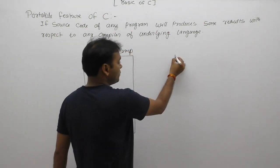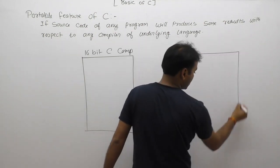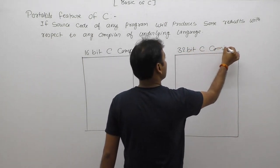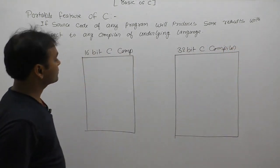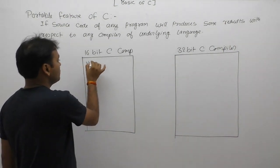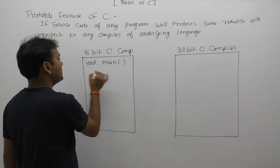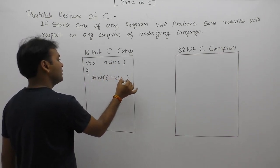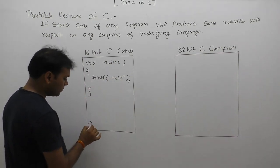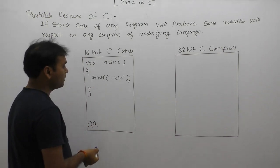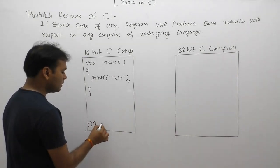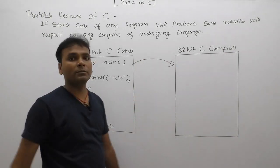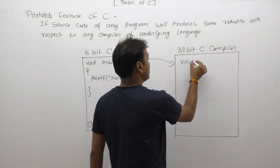The next one is a 32-bit C compiler. We are creating a program with 'void main' and displaying a simple message: 'hello' using the printf function — 'printf("hello")'. After executing this program on the 16-bit compiler, the output is simply 'hello'.